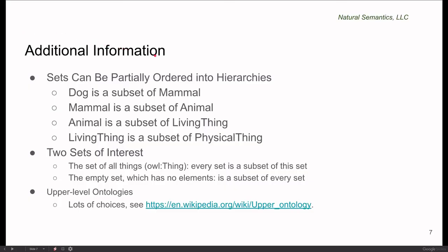Just a few final points with respect to set theory. First of all, we've talked about sets and subsets. And the logical conclusion of that is that sets can be partially ordered into hierarchies. So for example, you can say that dog is a subset or a subclass of mammal. Mammal is a subset or a subclass of animal. Animal is a subset or subclass of living thing. Living thing is a subset of physical thing and so on. So you can create arbitrarily deep hierarchies of class subclass relationships.